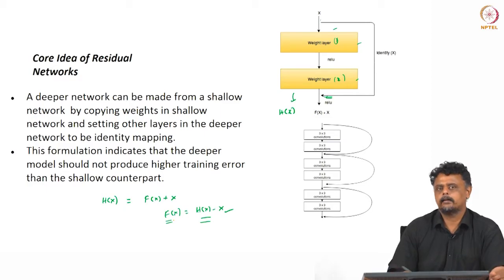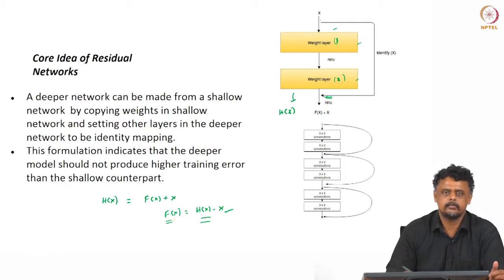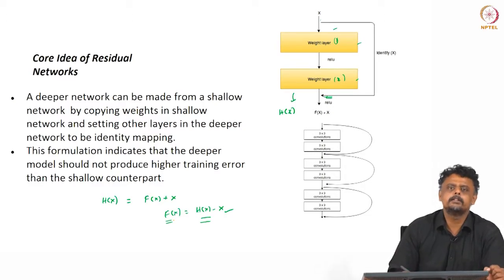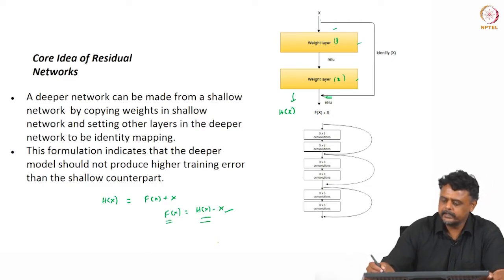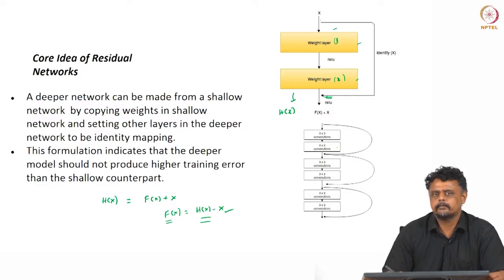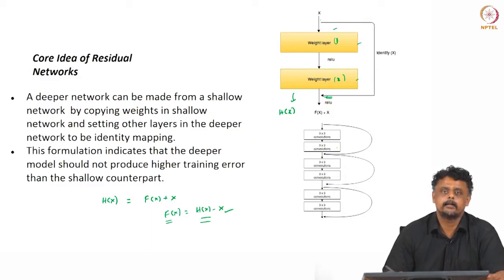This is the principle behind skip connections. The authors also show in their paper — and in presentations available online — that the gradient update step is additive, not multiplicative. This additive gradient step leads to actual updates to the weights, so there is no vanishing gradient problem. For the ResNet used in the ImageNet challenge, skipping two layers at a time works well, achieving less than 4% error rate on the ImageNet database.